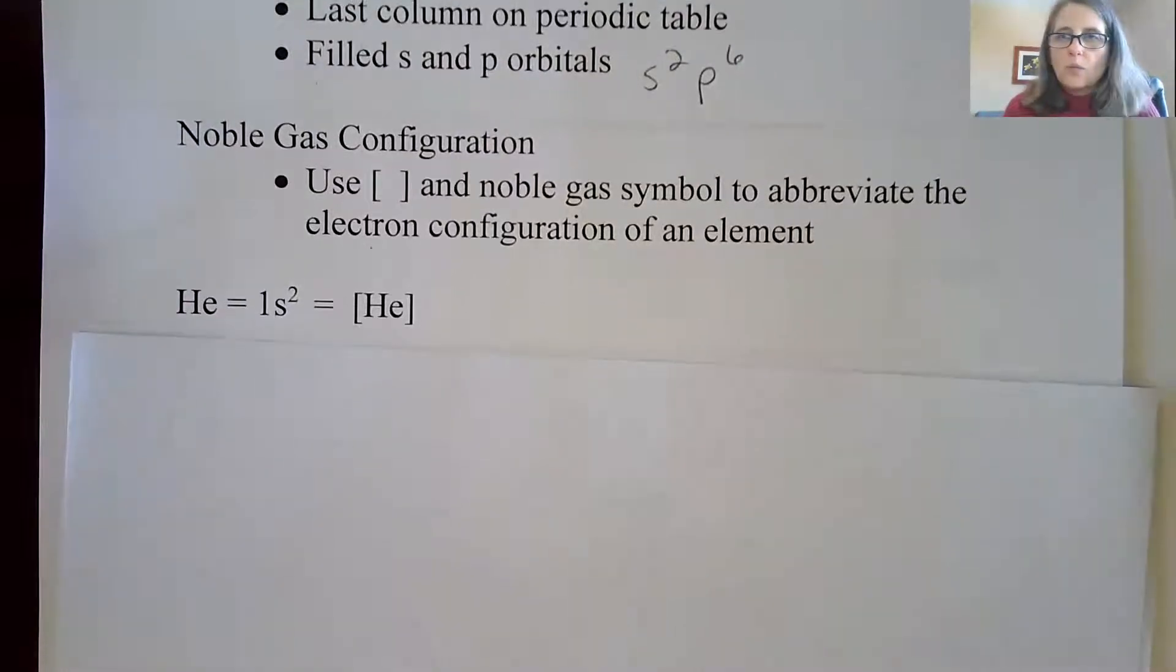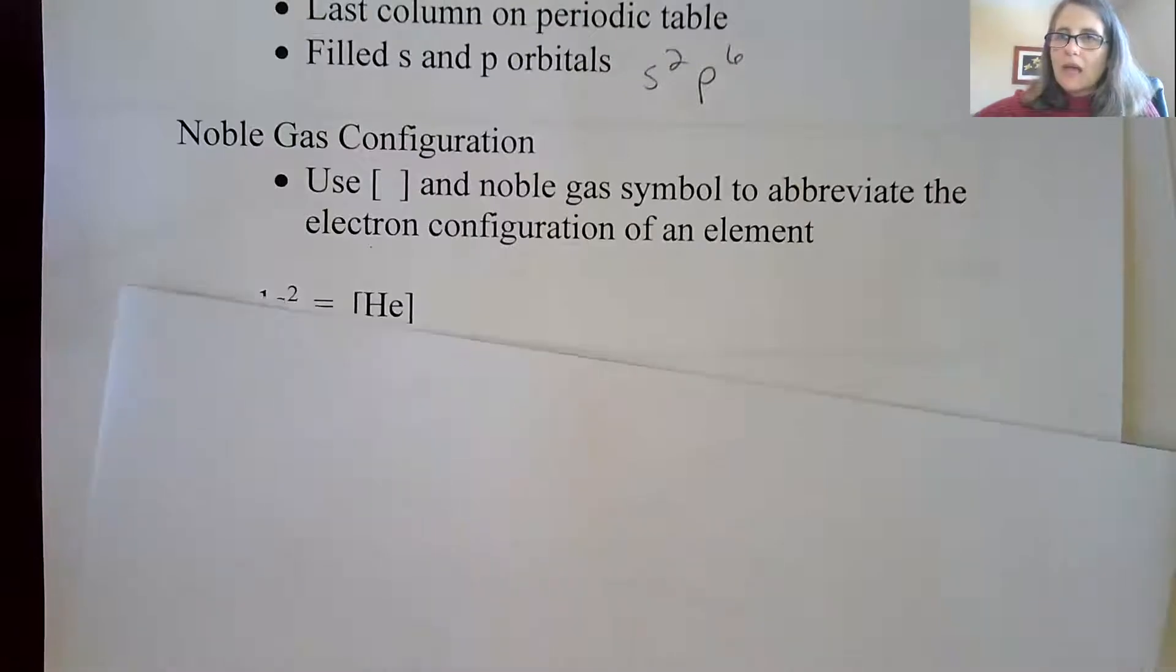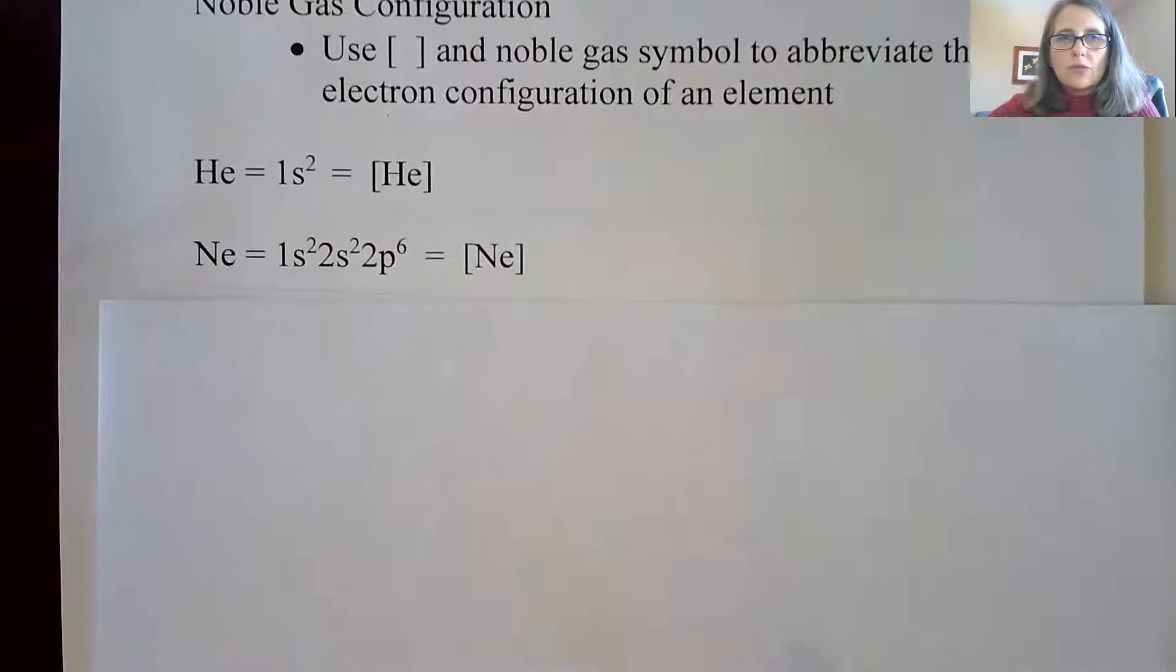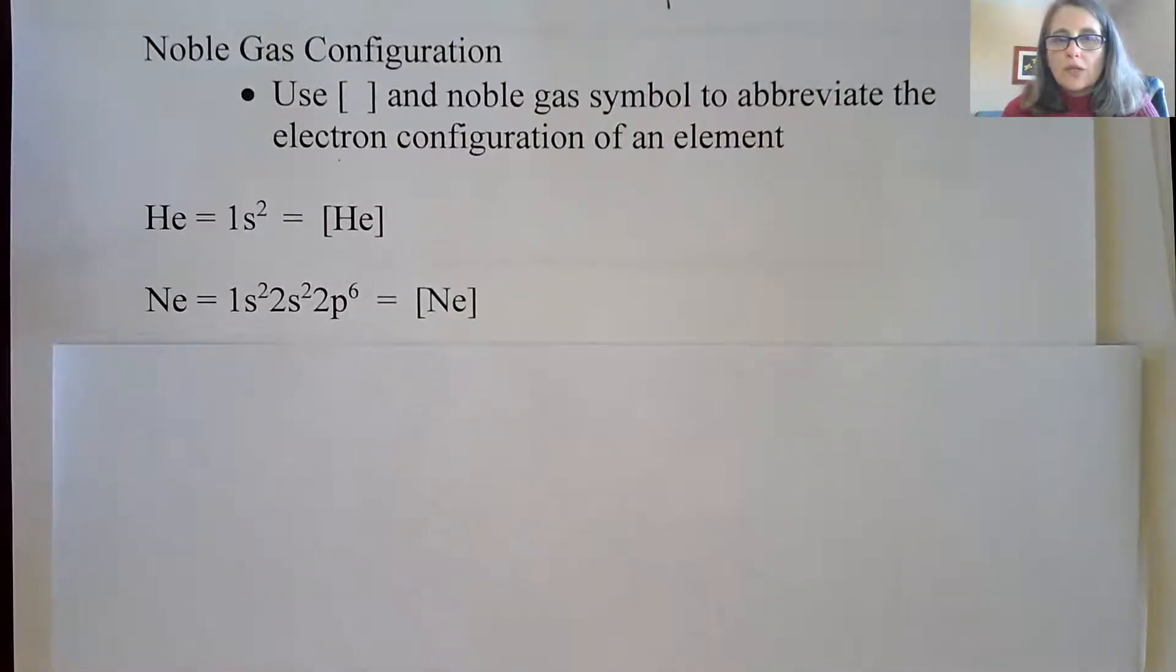For example, I could abbreviate the 1s² as helium. It really doesn't buy me that much. It's pretty easy for me to write 1s². But technically speaking, I could write helium and then the rest of the electrons after that. Where it gets much more interesting is when I go down to energy level 2, it ends in neon.